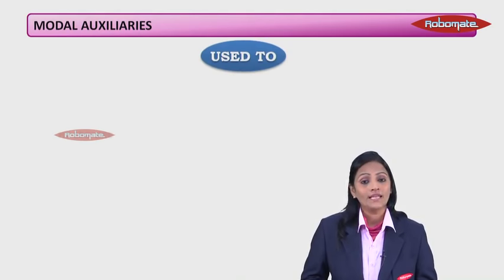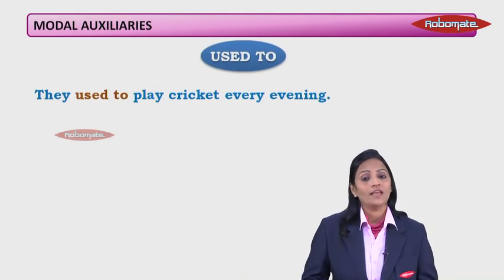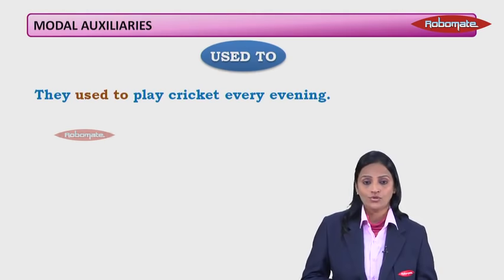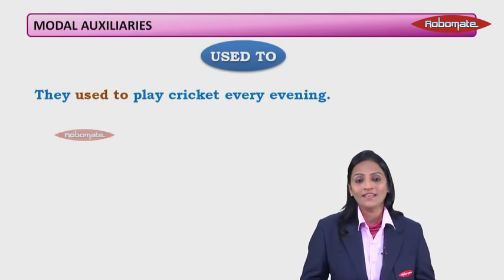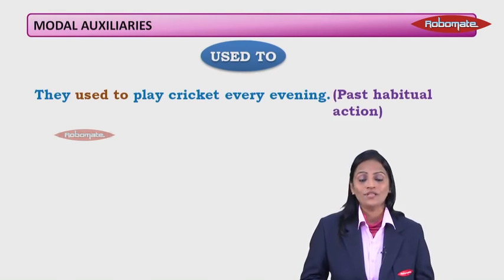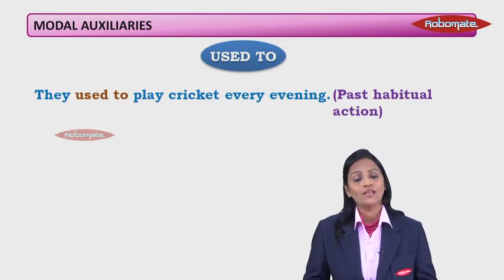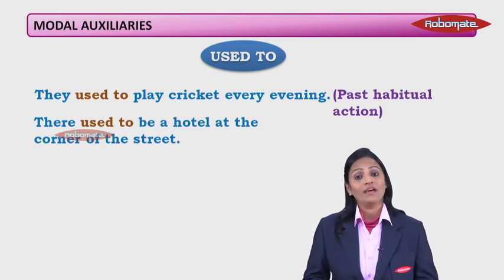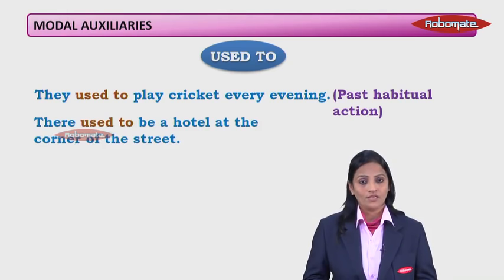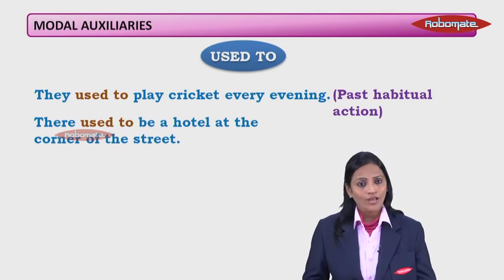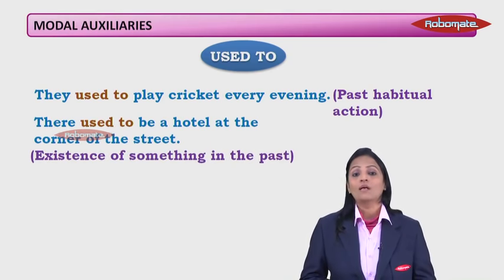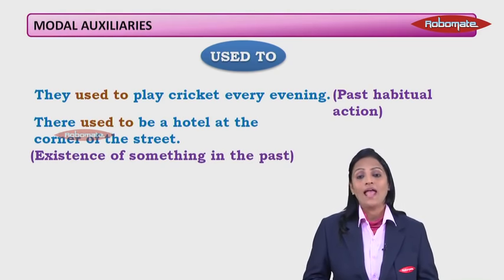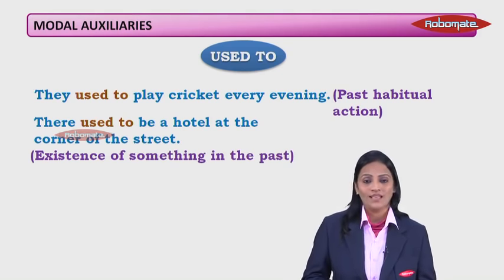'Used to': 'They used to play cricket every evening' — past habitual action, something done continuously in the past. 'There used to be a hotel at the corner of the street' — the existence of something in the past, which now no longer exists. So 'used to' has two functions: past habitual action and past existence.